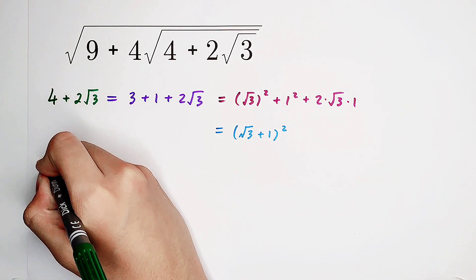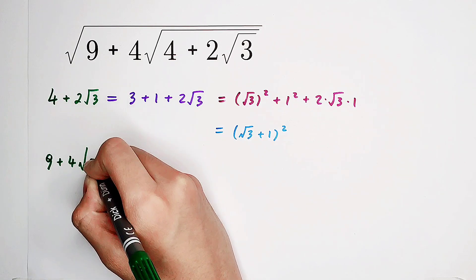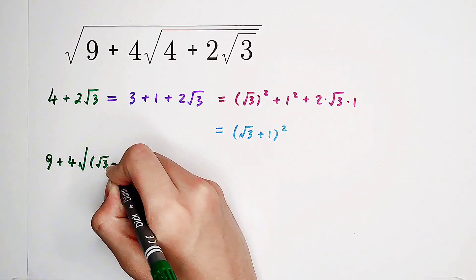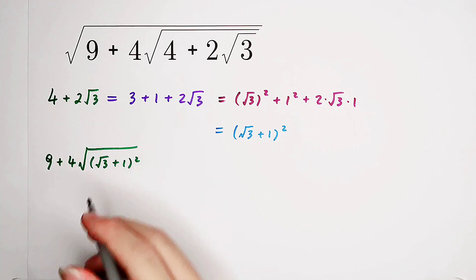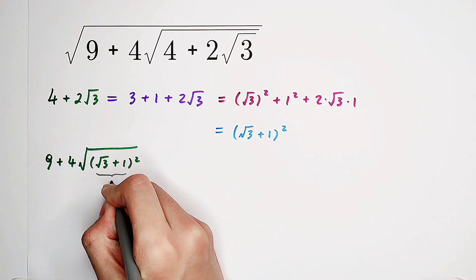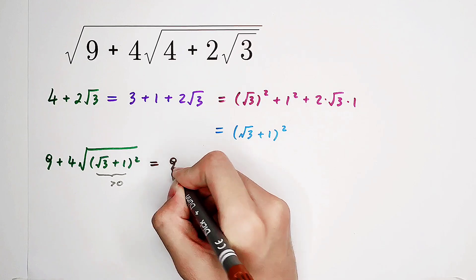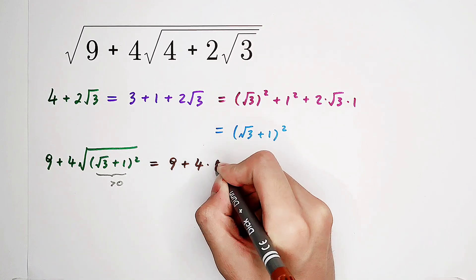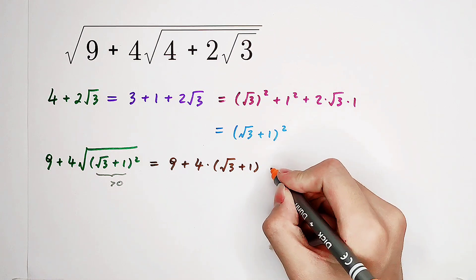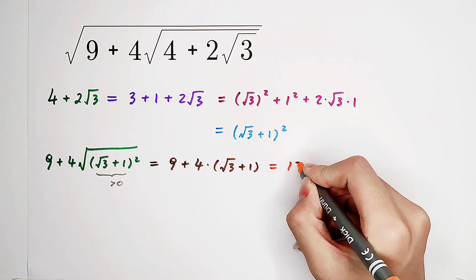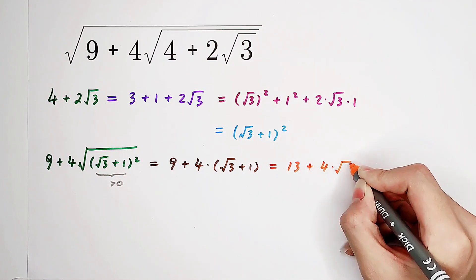So now, let's have a look at 9 plus 4 times square root of — this one is just square root of 3 plus 1, all squared. Since this expression is positive, it is just 9 plus 4 times square root of 3 plus 1, which equals 13 plus 4 times square root of 3.